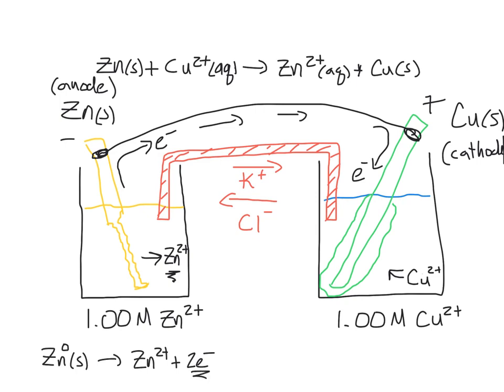Those electrons then go through the external circuit to the other side where the reduction reaction is happening, the reduction half reaction. The copper 2+, plus the two electrons, is transformed into copper solid, and I'll put the little 0 oxidation state just to remind us, that's solid metallic copper. So here are the two half reactions that are happening in the separate compartments.